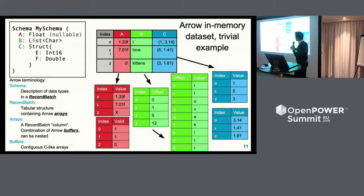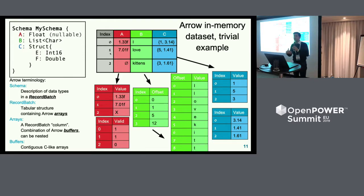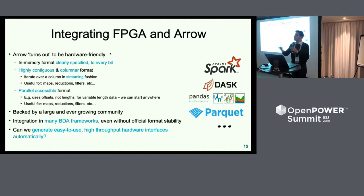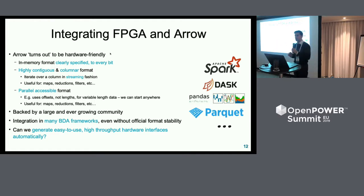This is very important for big data analytics because you have pipelines that use multiple different programming languages to do the work. It's also a columnar data format, which means all the data of a specific type are grouped together so you know where your data is in memory, and it's contiguous — all the data stored next to each other — so it's very hardware friendly. You can define a schema that shows what the data looks like in memory, and this schema stores any different kind of data type: floats, lists, structs, user-defined data types, all with very efficient representations in memory. It turns out, by design, this representation is also very hardware efficient because it's highly contiguous and columnar, so your accelerator can know where your data is and access it directly.